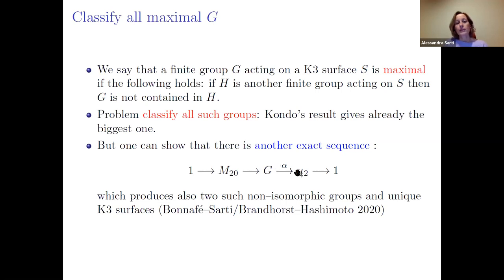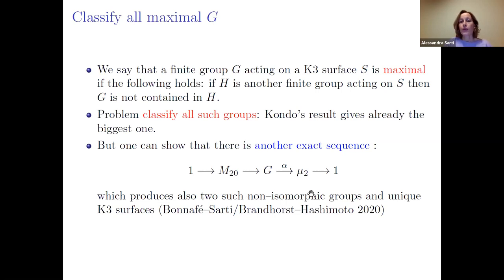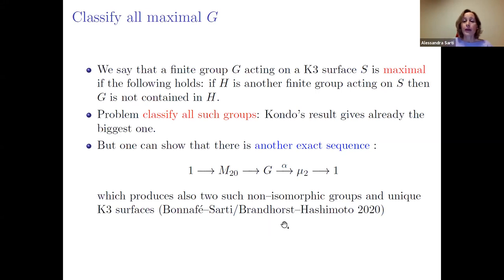Kondo's extension is M₂₀ → g → μ₄. The question we started studying last year: can we extend M₂₀ with other roots of unity? The answer is yes — there are two more extensions of M₂₀, now by μ₂ (μ₄ is Kondo's result; μ₂ gives less). We found two such groups and unique K3 surfaces with these actions. This was found with Cédric Bonafé, and independently by Simon Brandhorst and Kenji Shimada.